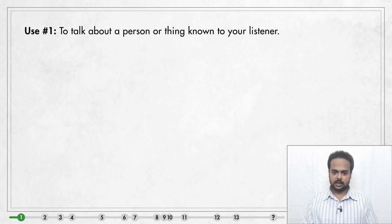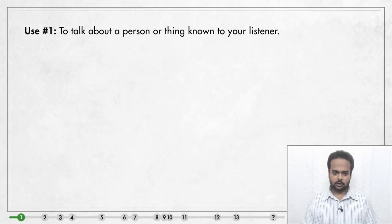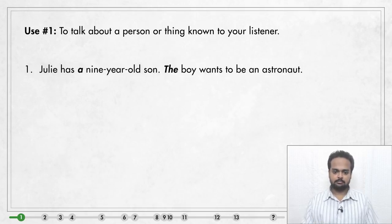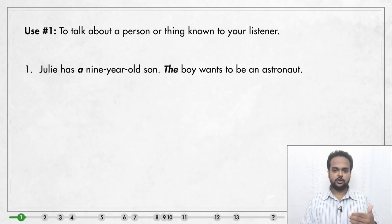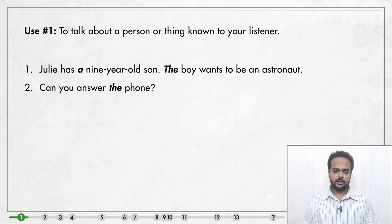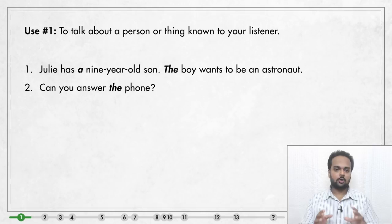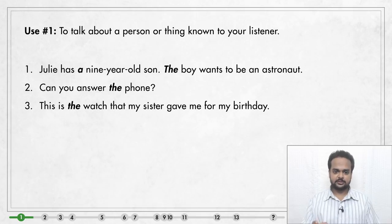Use number one — we discussed this in the previous lesson, and it is also the most important use. Use 'the' to talk about a person or thing known to your listener. For example: 'Julie has a nine-year-old son. The boy wants to be an astronaut.' I first say 'a nine-year-old son' because you don't know him yet, but once I've introduced him, I say 'the boy' because he is now known to you. Another example: 'Can you answer the phone?' — the phone is already known to you.